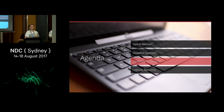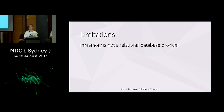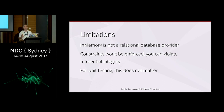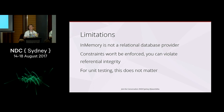Let's talk about some of the limitations and concerns. The first thing is that in-memory is not a relational database — in fact EF Core is not relational; it can support relational and NoSQL. Using this approach, your constraints aren't going to be enforced and you could violate referential integrity. But this is a small issue because you need to remember that what you're testing is not Entity Framework Core or your database — you're testing something that depends on it. In-memory behaves approximately like a real database and does a really great job at that.